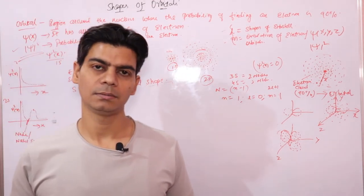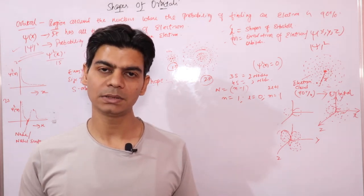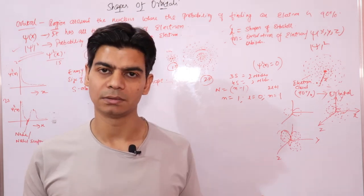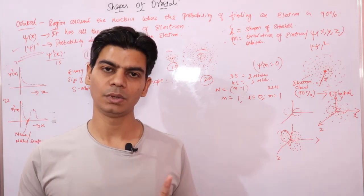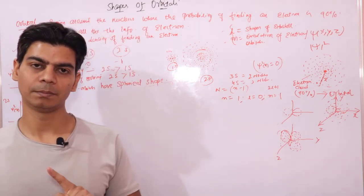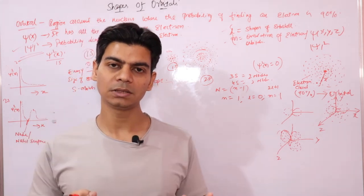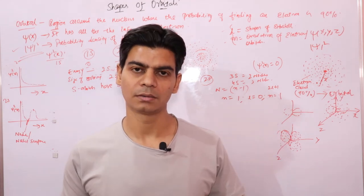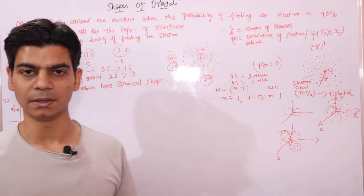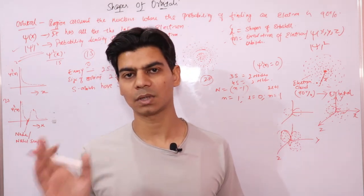There is only one S orbital, which is spherical in shape — meaning one orientation, as given by the magnetic quantum number. For P orbitals, the magnetic quantum number gives three orientations: one along the X axis, one along the Y axis, and one along the Z axis. The electron clouds you draw in three-dimensional space correspond to these orientations.